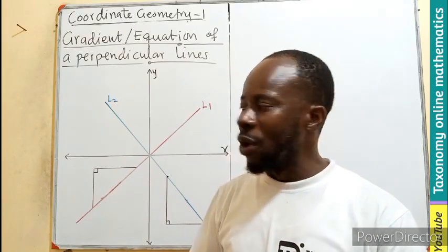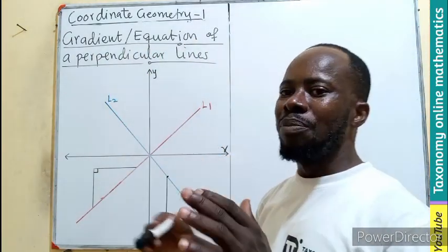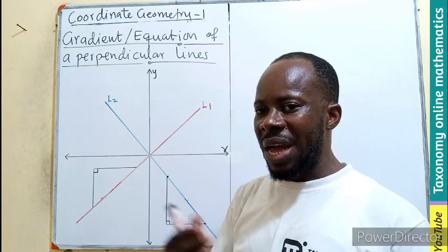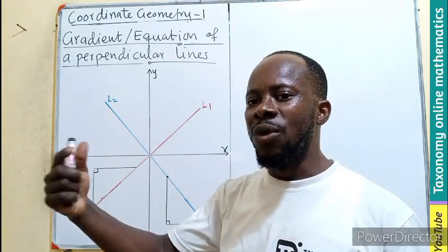So, two perpendicular lines. We want to know how you can find the gradient and the equation of perpendicular lines. Already we know that when you multiply the gradient, that is what normally we have. It will always give you a negative 1.